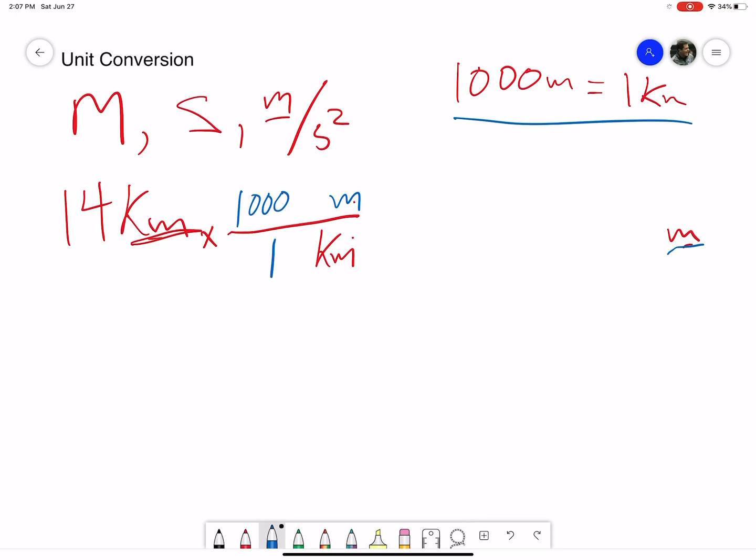Now the last thing is you multiply everything on top and divide anything on bottom. I have fourteen and a thousand on top, which means I have fourteen thousand. On the bottom we only have a one, so I'm dividing by one, which doesn't make any difference. So 14 kilometers equals 14,000 meters.